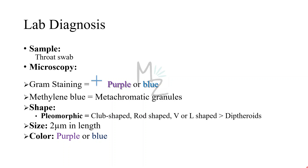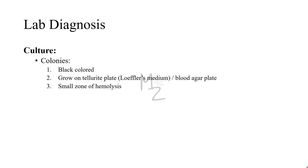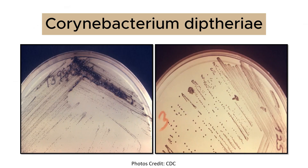Culture media include Löffler's medium, a tellurite plate, and blood agar. The tellurite plate is the selective media while blood agar is non-selective. Colonies formed will be black in color with a small zone of hemolysis. The tellurite plate contains a tellurium salt that is reduced to elemental tellurium within the organism — the typical gray-black color of tellurium in the colony is a telltale diagnostic criterion, as you can see on the left side.